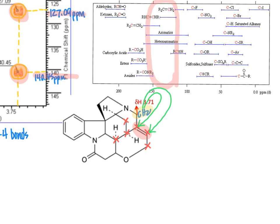In combination with the COSY spectrum, the HSQC spectrum, and the one-dimensional NMR data, we can apply this HMBC data as one of the valuable tools to piece together the complete structures of organic molecules — including proteins or nucleic acids. Any molecule rich in carbons and hydrogens is suitable for NMR evaluation using this variety of 1D and 2D techniques. In the next video, we will work through an example problem applying multiple types of 2D NMR analyses to solve complete chemical structures based on 1D and 2D NMR data.